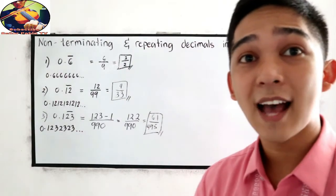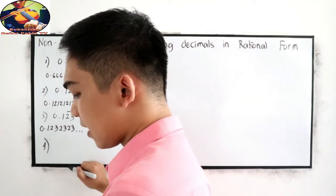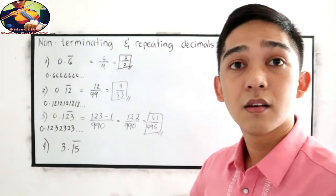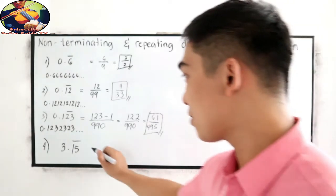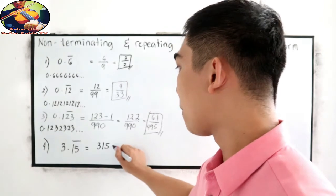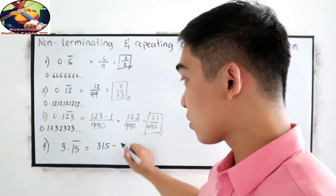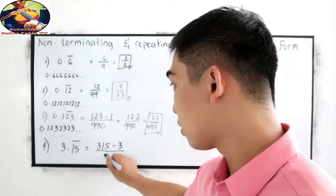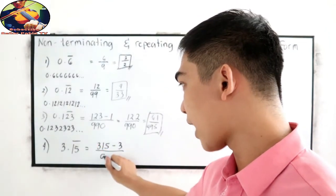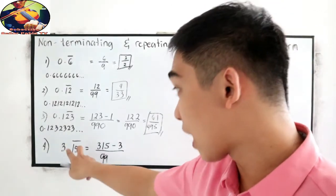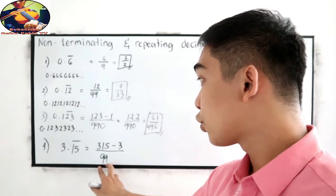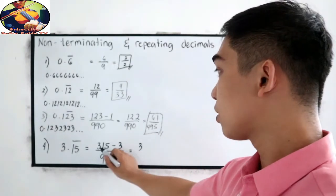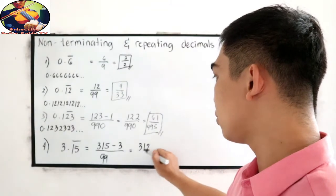Our last case, number 4: let's say we have 3.15 where the bar is on 1 and 5. Copy 3, 1, 5, then subtract 3 since it is not included in our bar. We have 2 decimal places included in the bar, so we write 9, 9 in the denominator — making the denominator 99. So, 315 minus 3 gives 312 over 99.